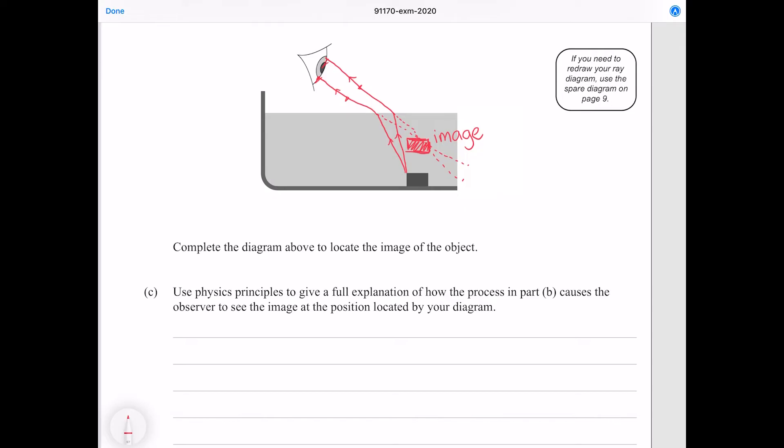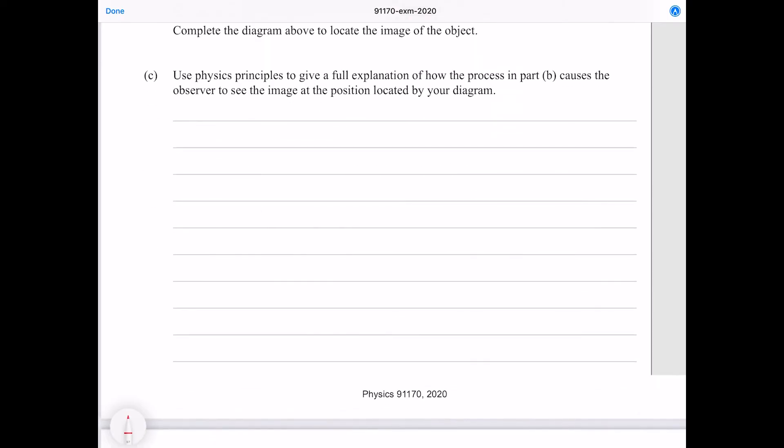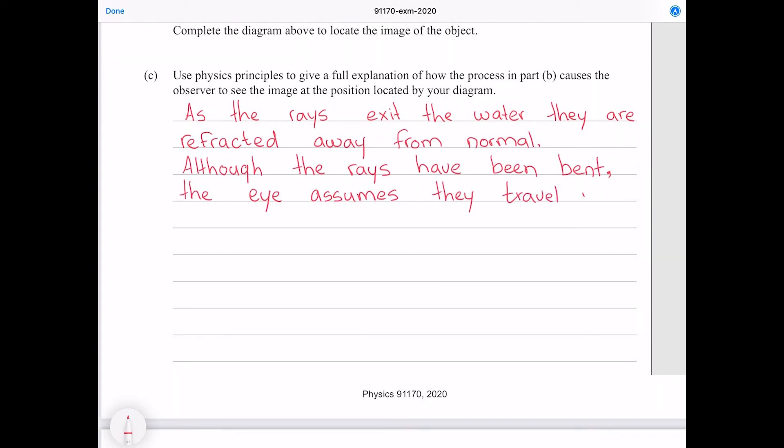And the second is that our eyes back trace the rays as if they carry on straight. Our eyes are not aware that any bending has occurred, so they assume that the direction that the rays are going is the exact direction in which they came from. So let's put that down into words. As the rays exit the water they are refracted away from normal. Although the rays have been bent, the eye assumes they travel in a straight path from their origin. This causes the image to be perceived in a different location to the object.